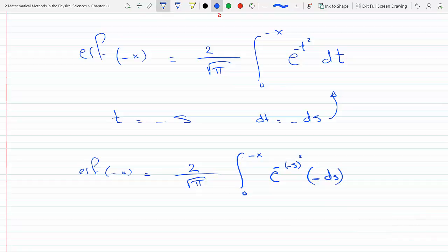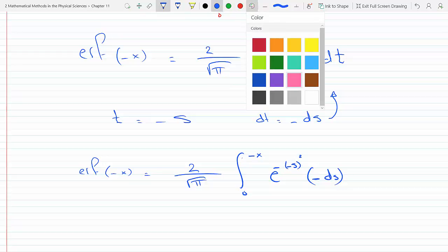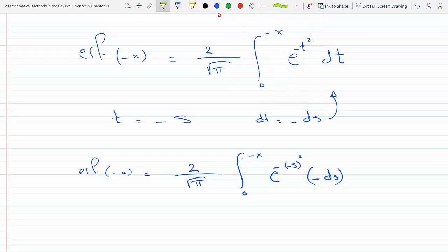Now notice the reason I did this substitution: to recap here, in the original integral I have a minus x and a zero, so the lower bound is t equals zero and the upper bound is t equals minus x. However, I'm trying to get the upper bound to be x instead of minus x. So if I do a substitution and multiply negative x by negative, that becomes an x.